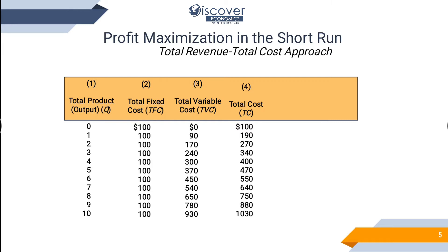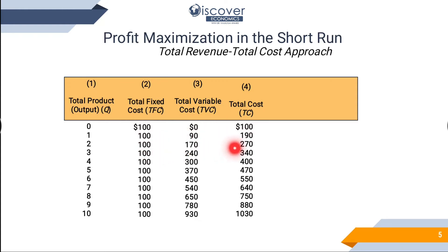We will go to total costs. Fixed costs plus variable costs equals total costs. 100 plus 90 equals 190. 100 plus 170 equals 270. And so on for total costs.